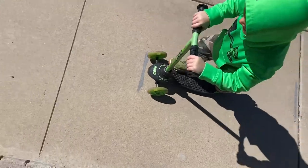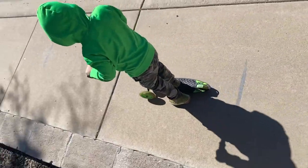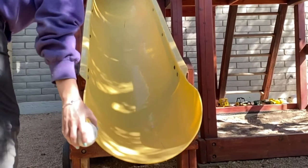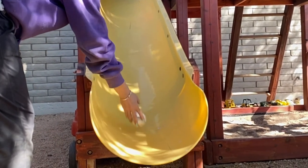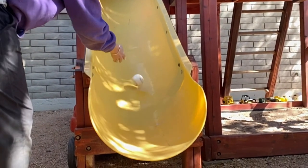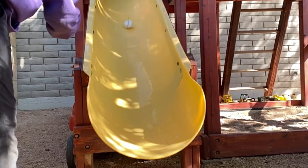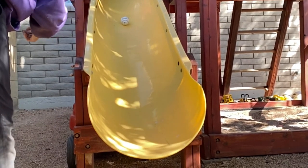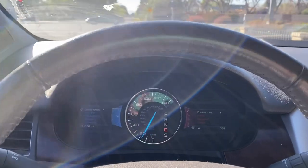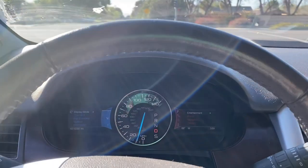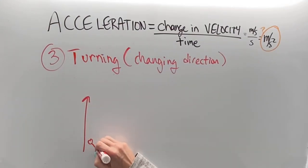Here we can see Bo starts out going fast and then slows down. When we throw a ball up a slide, it slows down because gravity is pulling against it, causing it to negatively accelerate. When we step on our brakes, we also slow down — something like 10 miles per hour per second.